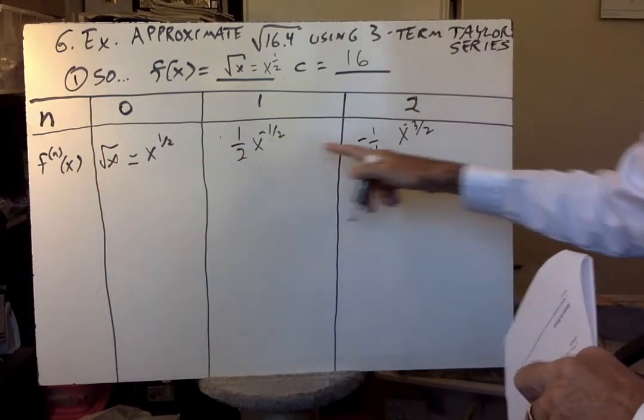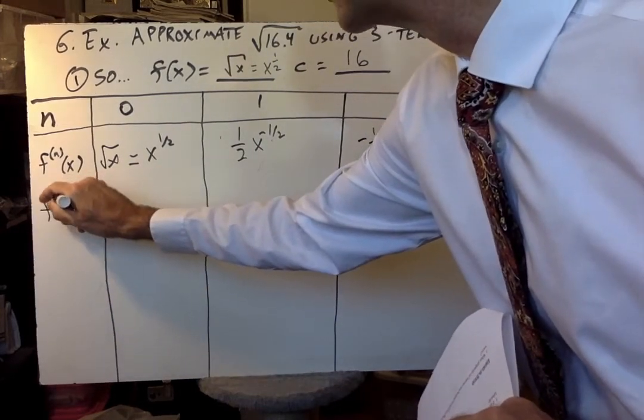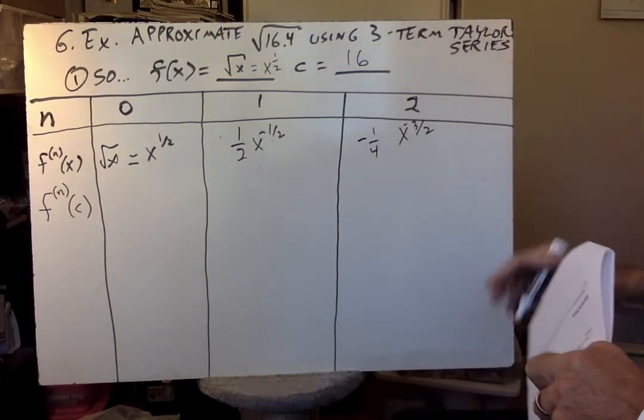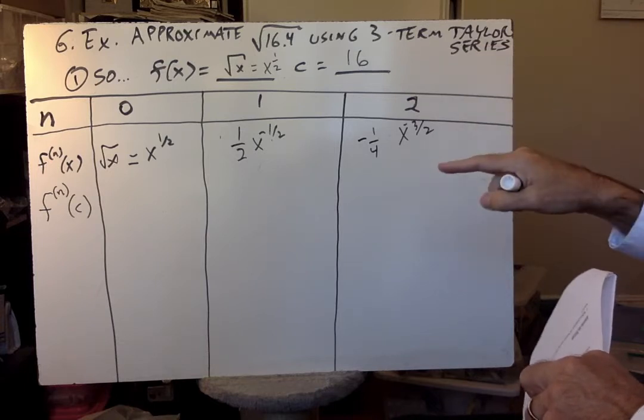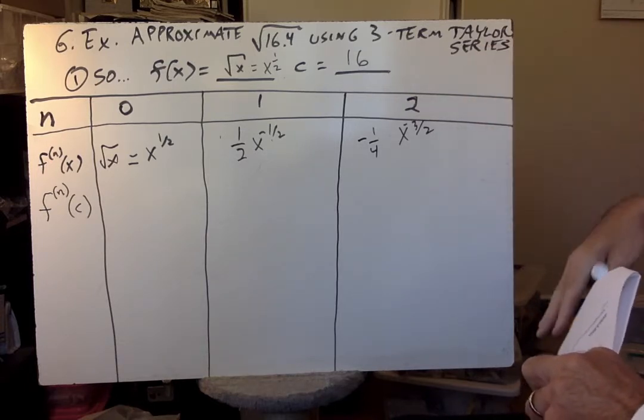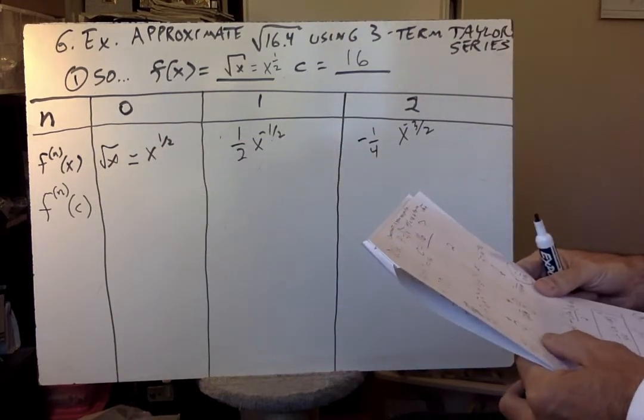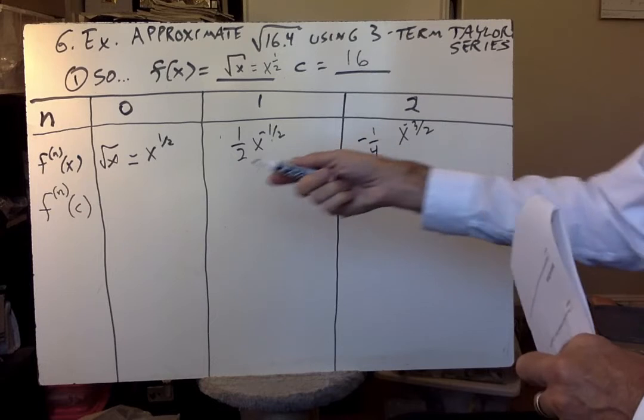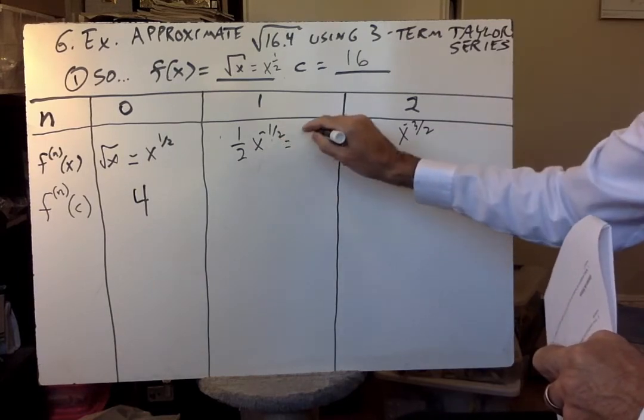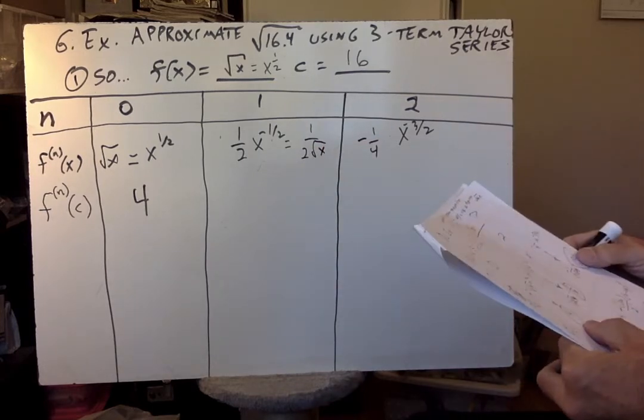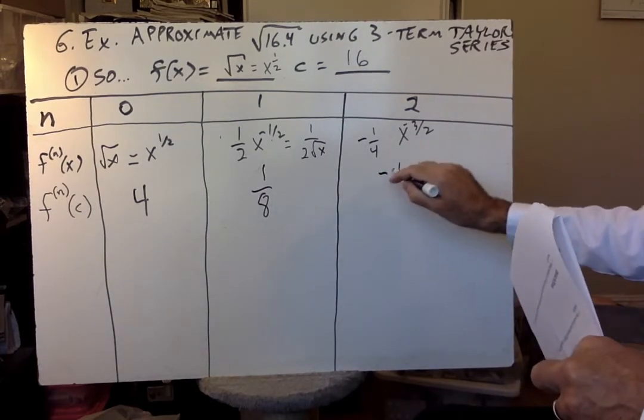The next step: if you look at what's on the previous page, you'll see that ultimately we want to get to f^(n), the nth derivative of f with c plugged in divided by n factorial times x minus c to the n. That's eventually what we want to get to. So now we're going to plug in c. Well, what's c? 16. So 16 to the one-half is 4. And we plug in 16 here. If it helps, you can write this as 1 over 2 times the square root of x to help you do the calculation. So this is 1/8. And if we plug in x equals 16 here, we get negative 1 over 256.